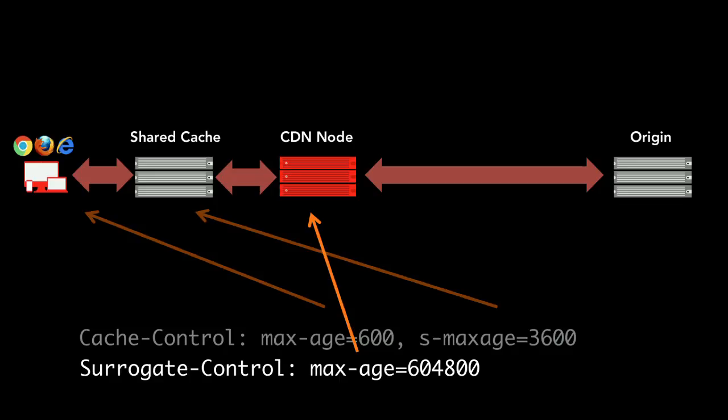A lot of times we see people who want to do things granularly upstream, and this is a way to do that control. Now, the seconds included in these headers is essentially how long something is allowed to be cached. Once those seconds run out, that content on the cache becomes stale. When content becomes stale, technically a cache is still allowed to store it, but it can't serve it without doing something called validation or revalidation.